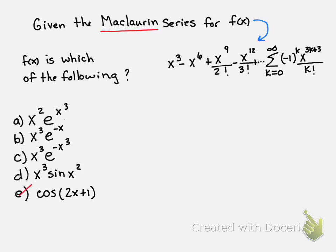So that does allow us to eliminate e. It can't be e because cosine of 2x plus 1 would be centered at negative 1 half.